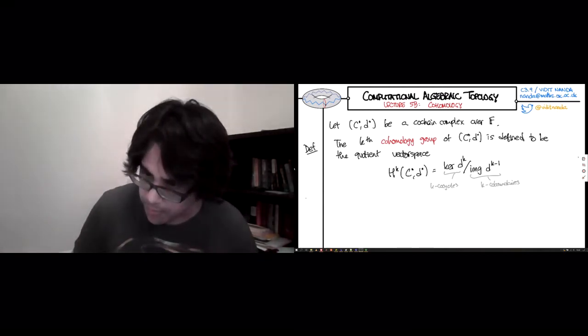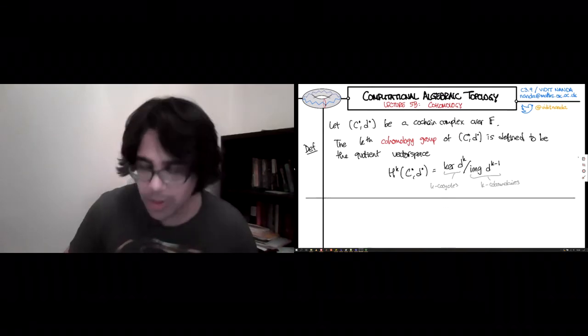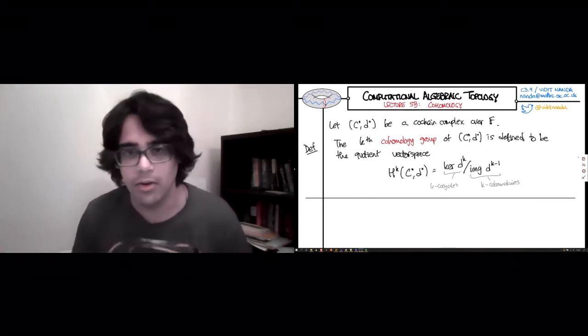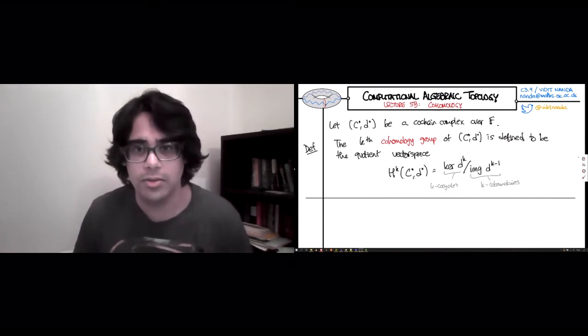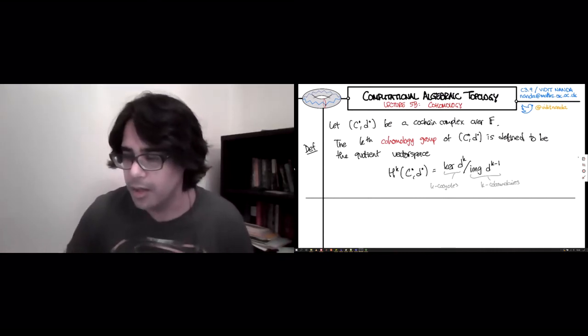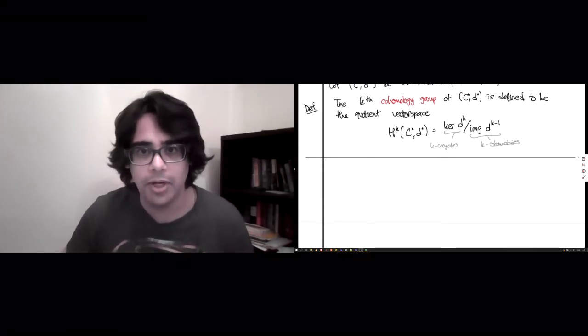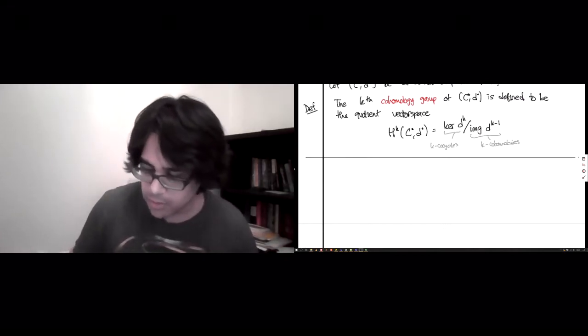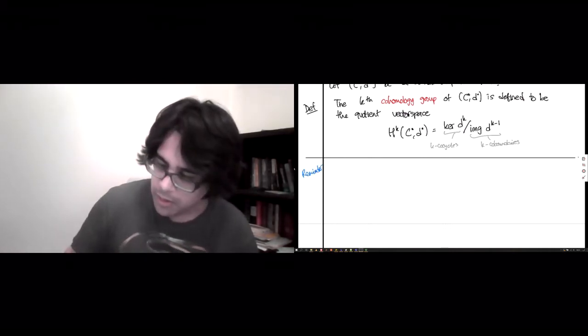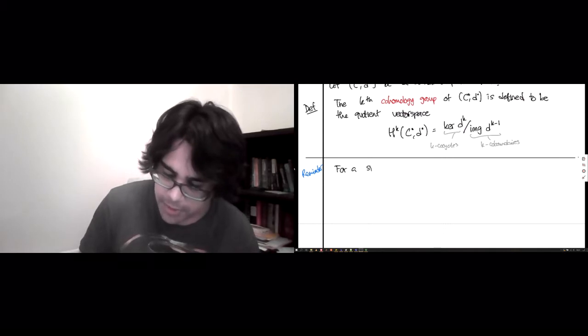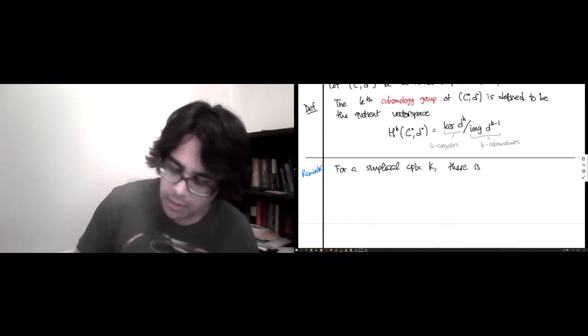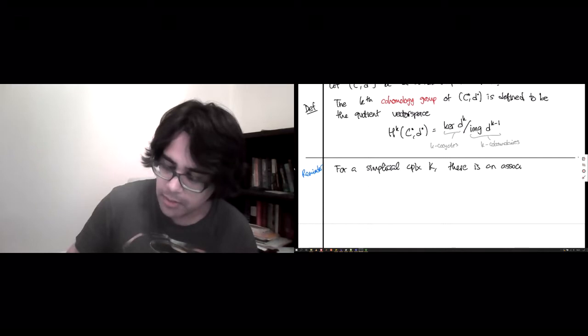Okay, now I realize that this may not seem very enlightening. We've just taken a definition that we were beginning to understand, turned around all the arrows, and produced a new definition just sort of purely from algebraic duality. So I think it's good if people spend a little bit of time trying to understand what this object is measuring. But let me quickly remind you, for a simplicial complex K, there is an associated co-chain complex, which I guess we should call simplicial co-chain complex.